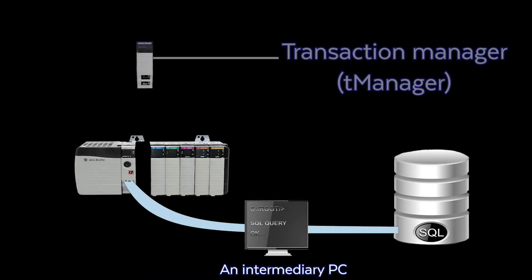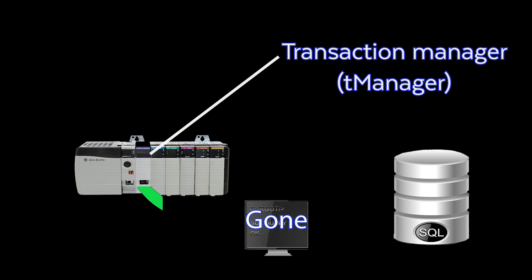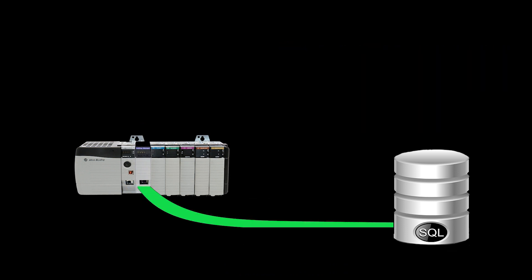Finally, T-Manager is the in-chassis robust module that lifts the burden and handles the transactions between the PLC and the enterprise database without an intermediary PC being required. Let's start with the first point — why complex data is a burden on PLCs — and we'll use recipe download as our automation project.